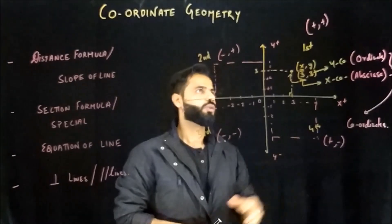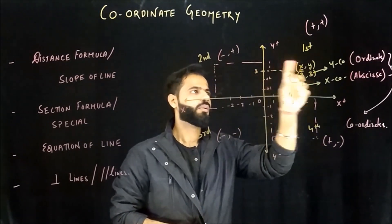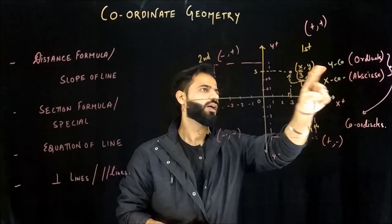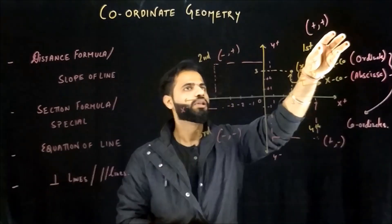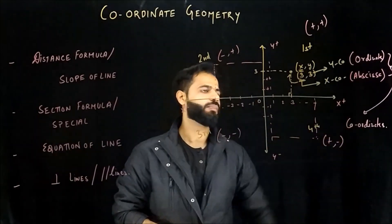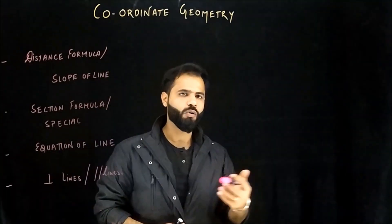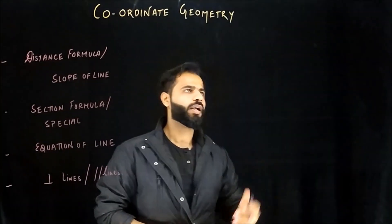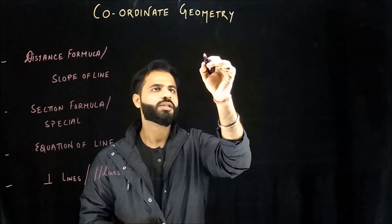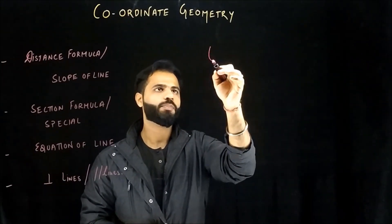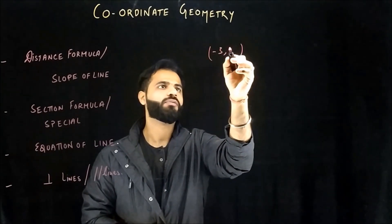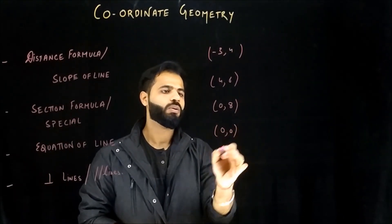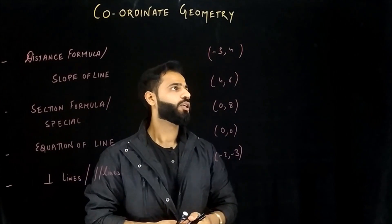Just remember: the first coordinate is the x coordinate and the second one is the y coordinate. x is called abscissa, y is called ordinate. Positive-positive, negative-positive, negative-negative, positive-negative for the four quadrants. Let's see how GMAT makes beautiful questions out of just this information. A basic question: tell me where these points lie — in which quadrant? The points are: minus 3 comma 4, 4 comma 6, 0 comma 8, 0 comma 0, and minus 2 comma minus 3.